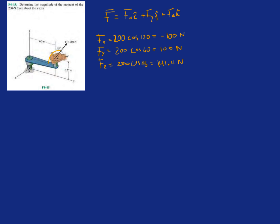Now we want to take the moment about O. The question is asking how much of that moment is being translated along the x-axis. Now that we're experts after two problems, we know that we just want the x-component of that moment about O. The notation for this will be: the moment about the x-axis equals the unit vector of the x-axis — which is just i — dotted with r cross F.